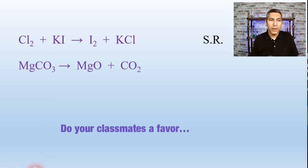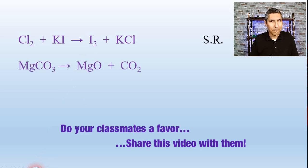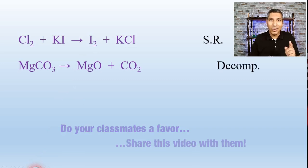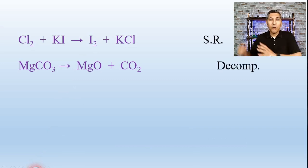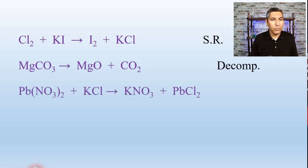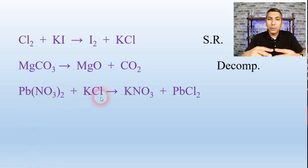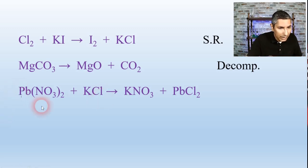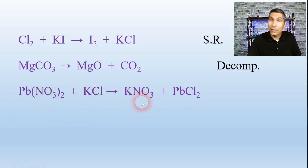How about this second example? If you said decomposition, you are correct — we have one reactant that is literally breaking down to form two products: magnesium oxide and carbon dioxide. How about the third example? We have two ionic compounds being added together, essentially swapping partners. The lead gets with chloride in one product, and the potassium gets with nitrate to make the other. This is a good example of a double replacement reaction.